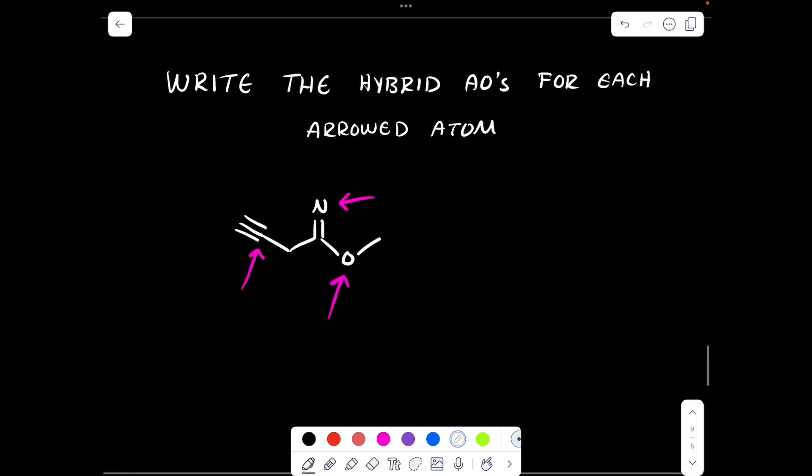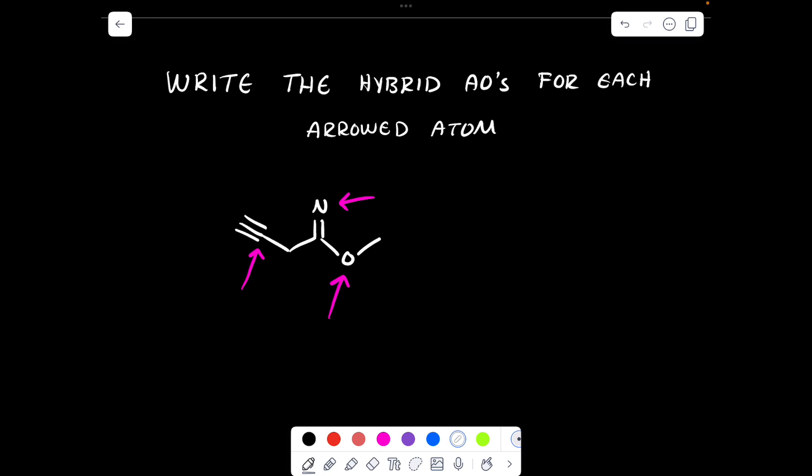We're going to do this, all right. Okay, next question: write the hybrid atomic orbitals for each arrowed atom. So we do the bubble method, well I do the bubble method. So you're looking for electron density bonding areas. So this carbon bonds in this direction to another carbon, so that would be one bonding area. And you're always going to have one s.